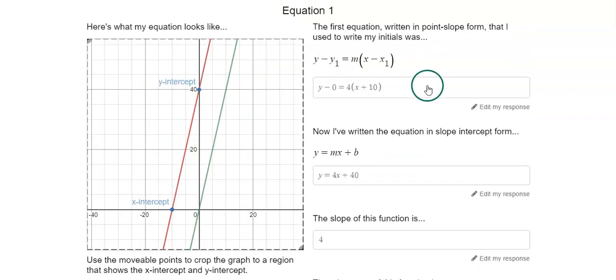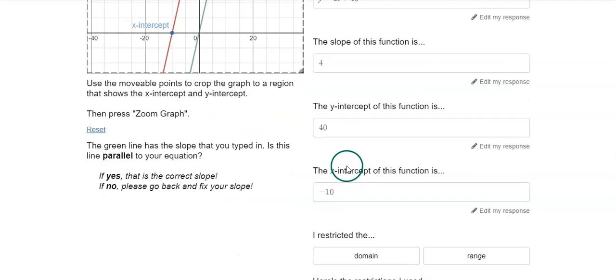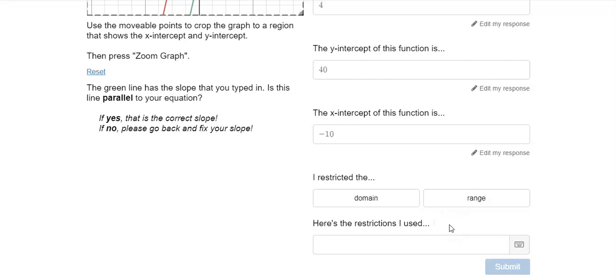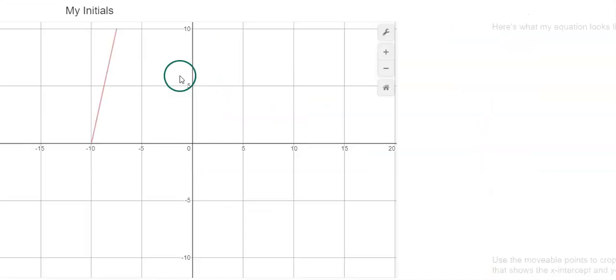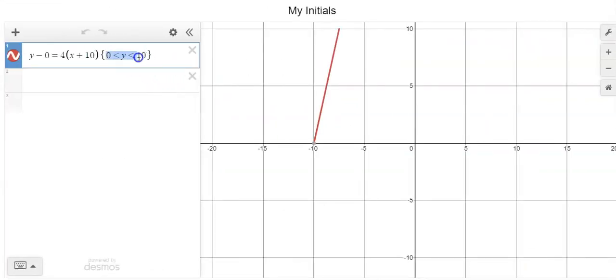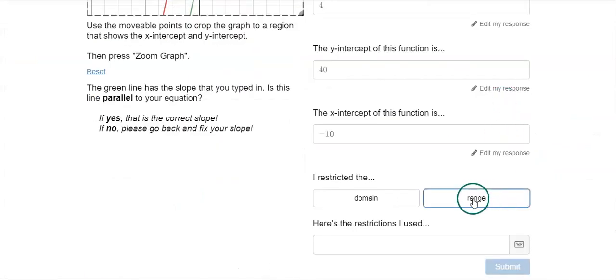So we've talked about a lot of the attributes for this graph. We've talked about its slope, we've talked about its Y intercept and X intercept. The last part is just to rewrite down the domain or range that you used on the other slide. Nothing is going to show up on this screen when you do this. But if you look back at your slide over here, you can see what you've typed in. I typed in zero less than or equal to Y less than or equal to 10, which means that I restricted the range since that's Y. And I'm just going to type it in. Once I press submit, you'll notice nothing else shows up on here. And I am done with that equation.